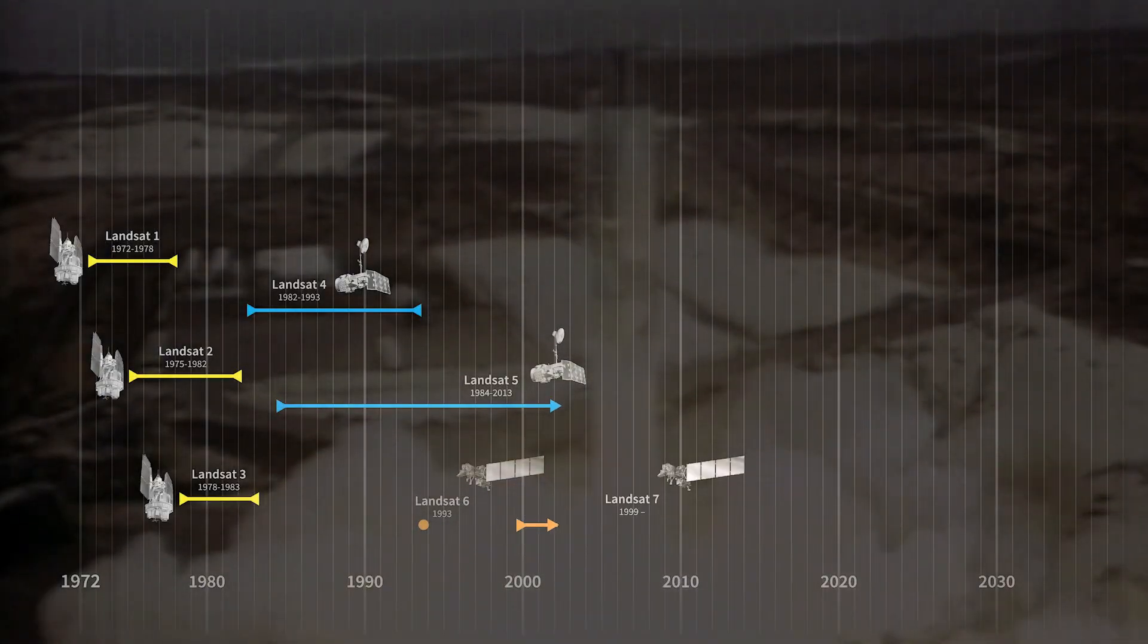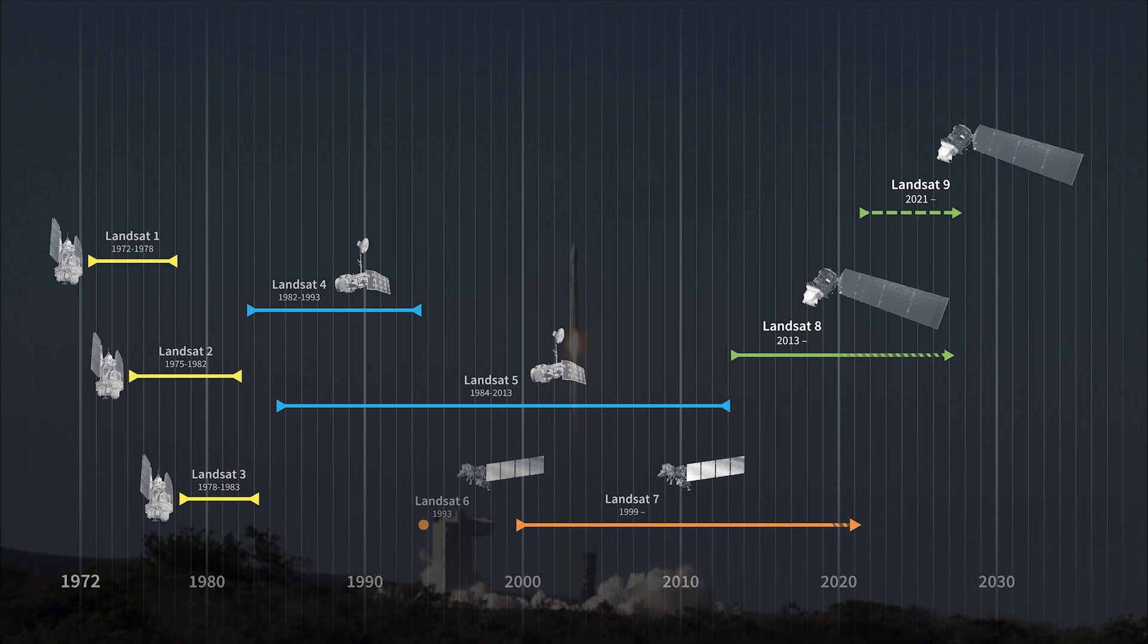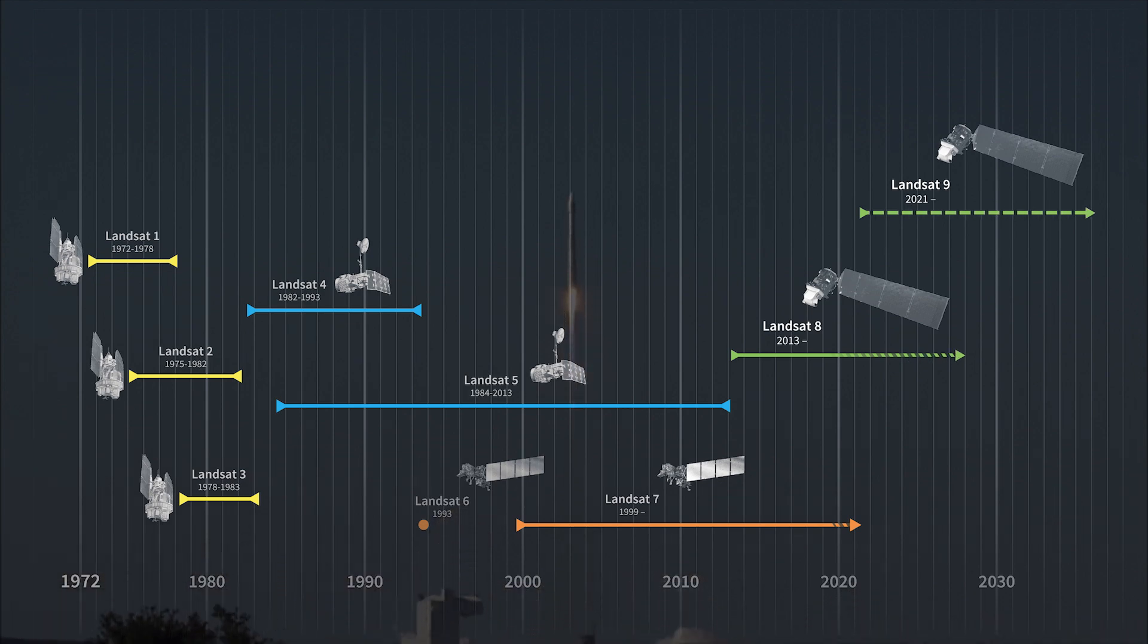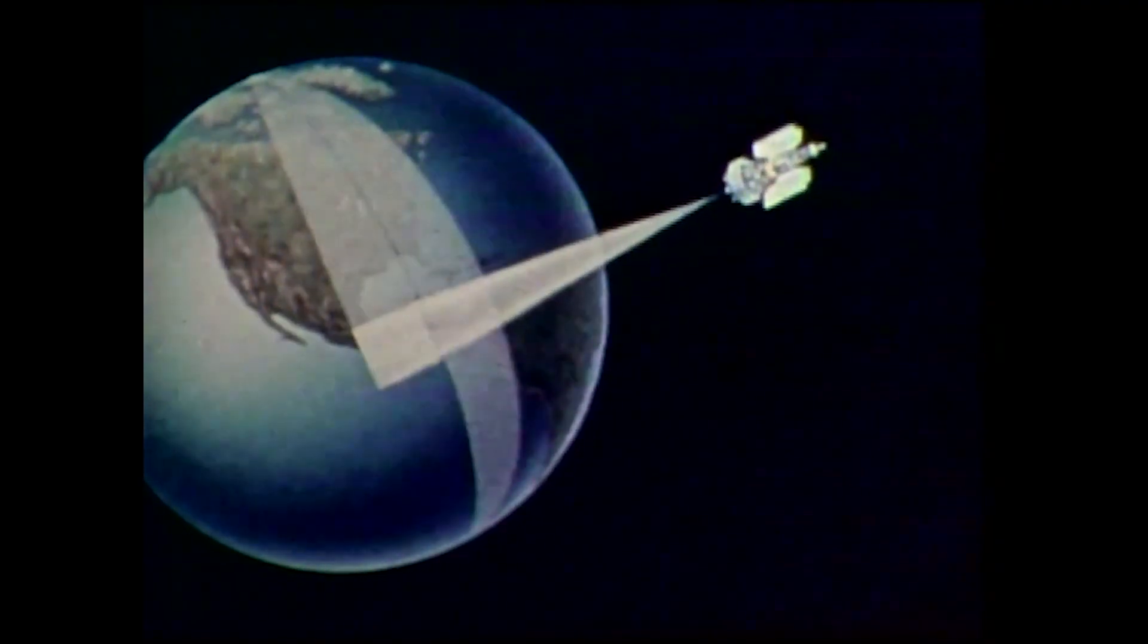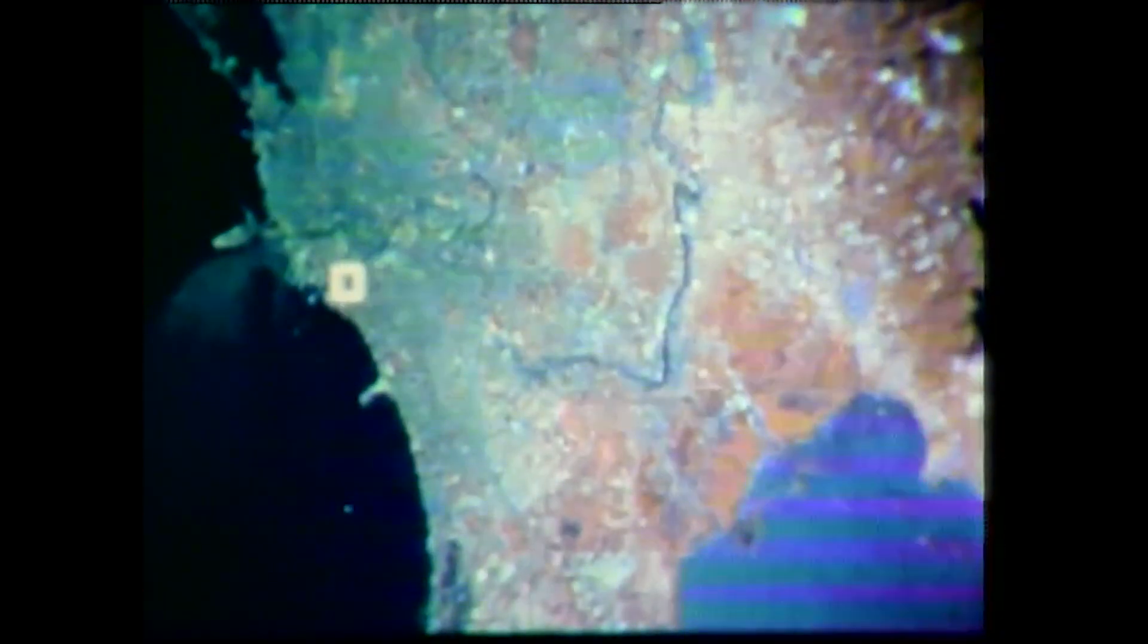At least one Landsat satellite has been orbiting Earth since 1972. That's nearly 50 years of steadfast observation. That first Landsat proved we could gather digitally encoded data from space and changed the way we look at Earth forever.